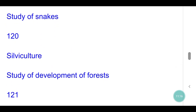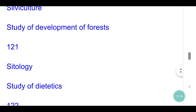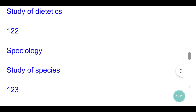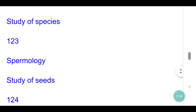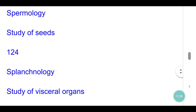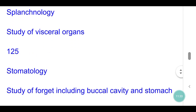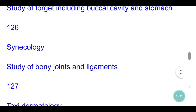Silviculture: study of development of forests. Sitology: study of dietetics. Speciology: study of species. Spermology: study of seeds. Splanchnology: study of visceral organs. Stomatology: study of foregut including buccal cavity and stomach. Syndesmology: study of bony joints and ligaments.